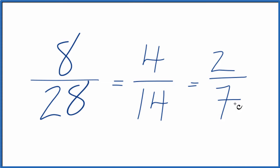You could also recognize that 4 goes into 8 two times and goes into 28 seven times. And you can skip this middle step here. Either way, the fraction 8 28ths is simplified down to 2 7ths. And we can't reduce this any further.